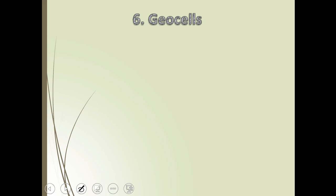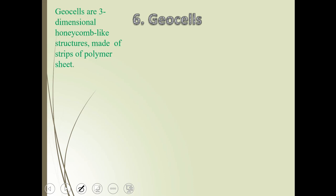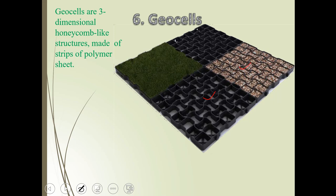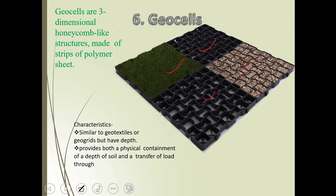Geoshells are three-dimensional geosynthetics. Their characteristics are similar to geotextile or geogrid but have depth, making them three-dimensional. They provide both visible physical containment of soil depth and transfer load while allowing water through. They are used in slopes with soft subgrade.